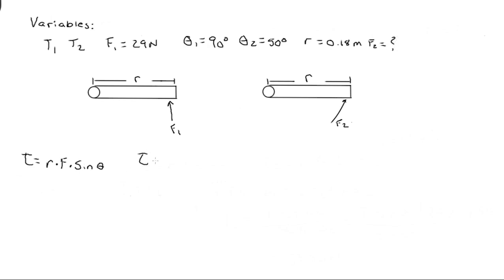As a reminder, torque is equal to the force times the lever arm times the sine of the angle. For this, torque 1 is equal to F1 times R times sine A1, and torque 2 is equal to F2 times R times sine A2. Since we want the torque output to be the same, we can set torque 1 equal to torque 2. This leaves us with the equation of F1 times R times sine A1 is equal to F2 times R times sine A2.